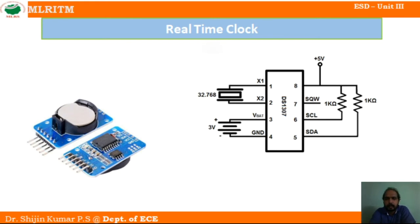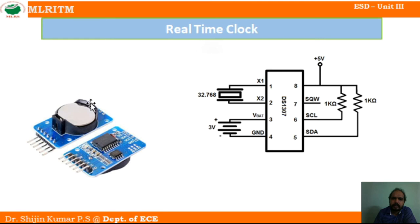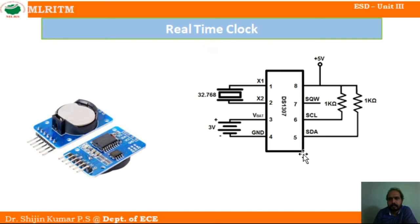Looking at the diagram of the real-time clock, we can see two sides: one side consists of the IC and the other side consists of a battery. This battery is connected to the real-time clock. The IC has eight pins and it is the driver that keeps track of time.